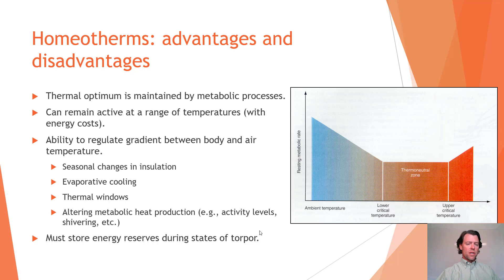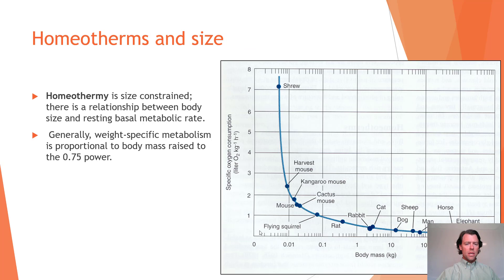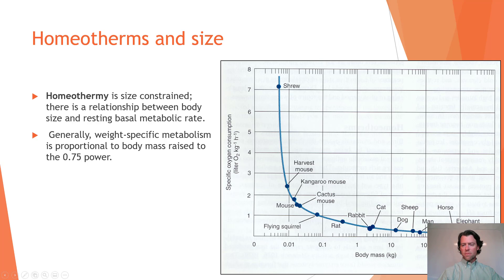Homeotherms must also store energy reserves during or leading up to states of torpor to survive winter conditions. Homeothermia is size-constrained: weight-specific metabolism is proportional to body mass raised to the 0.75 power. So the resting metabolic rate per unit body mass for a shrew is much higher than that of an elephant or horse. This is why shrews must be voracious predators — they need to constantly eat to maintain the high metabolic rate required for thermoregulation.